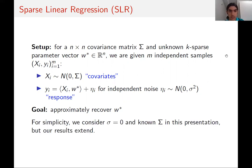For simplicity in this talk, we're going to only consider the noiseless case, where we're aiming to exactly recover w-star. We're also going to consider that the covariance matrix sigma is known to us. Our algorithmic results extend even without these assumptions.